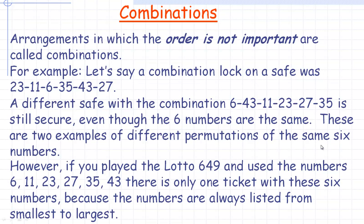Now, in Canada, one of the lotteries is called Lotto 649, where you pick six numbers from 49. If you use those same six numbers — 6, 11, 23, 27, 35, and 43 — there's only one ticket with those numbers, because it doesn't matter what order you want them in; they're simply listed from smallest to biggest on the ticket. If somebody else wants the same numbers in a different order, it doesn't matter — it's still the same ticket. That's an example of a combination, because order doesn't matter.